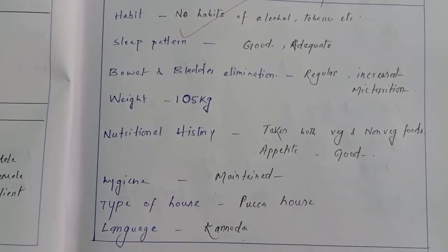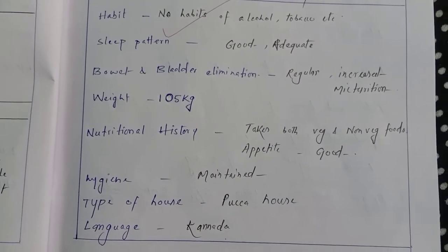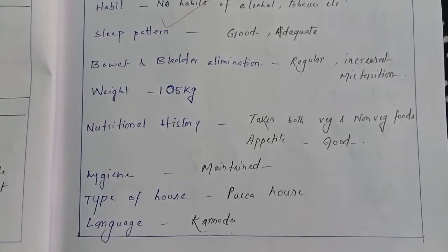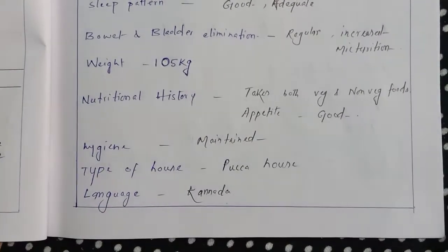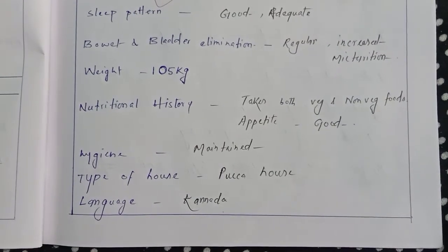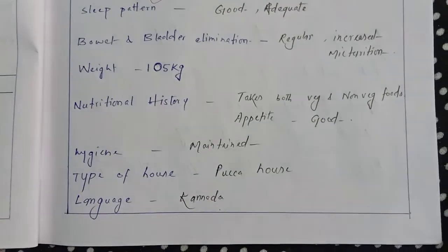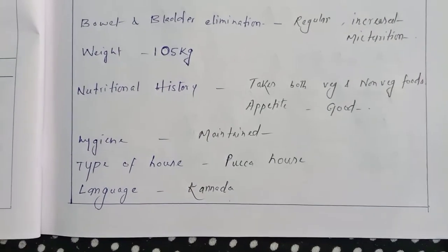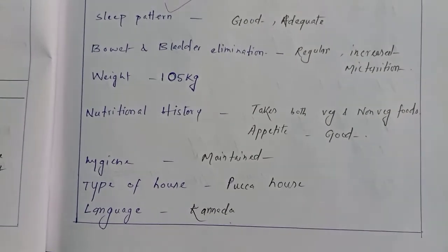Personal history: no habits of alcohol or tobacco. Sleep pattern adequate. Bowel and bladder elimination regular with increased urinary frequency. Weight 105 kg. Nutritional history: likes both veg and non-veg foods, appetite is good. Hygiene maintained. Type of house: book house. Language noted.